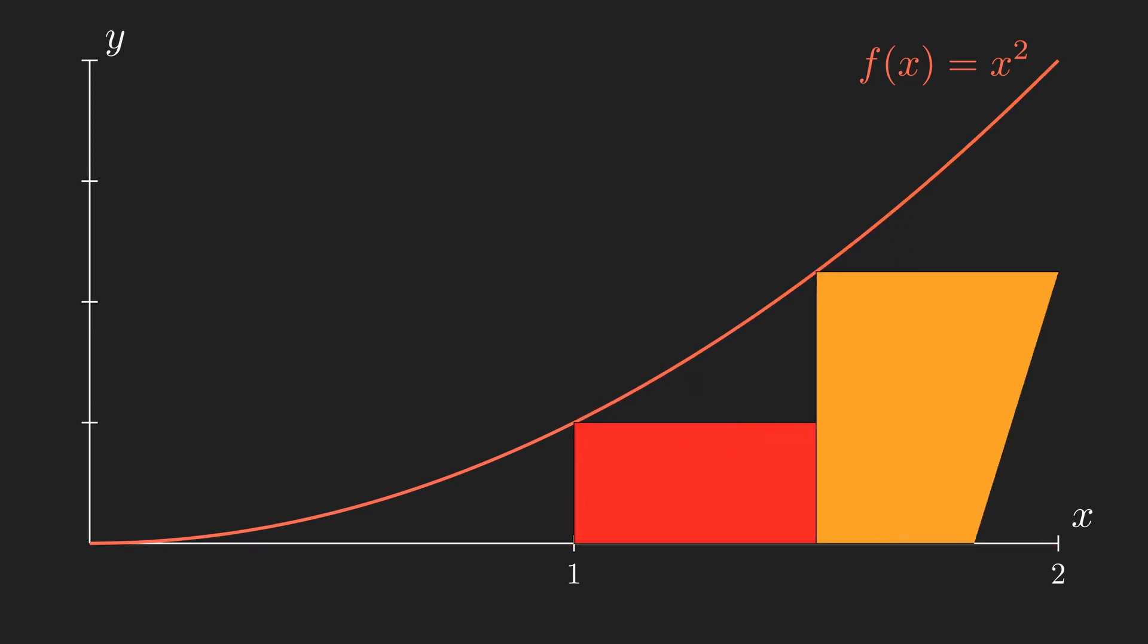Perhaps we start by splitting this area up using rectangles, since we can easily find the area of a rectangle. The height of these rectangles is simply f of x at the position the rectangle starts, and the base will set to some difference x, or dx.